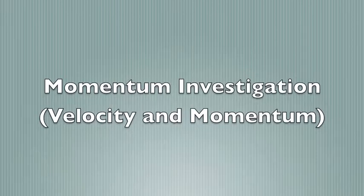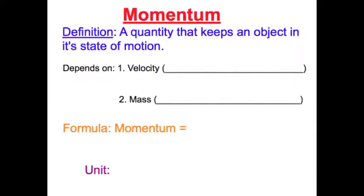During this investigation, we're going to determine what effect the velocity has on the momentum of a moving object. Momentum is a quantity that keeps an object in its state of motion. Basically, it is how difficult it is to change the motion of an object. It depends on the mass and velocity.